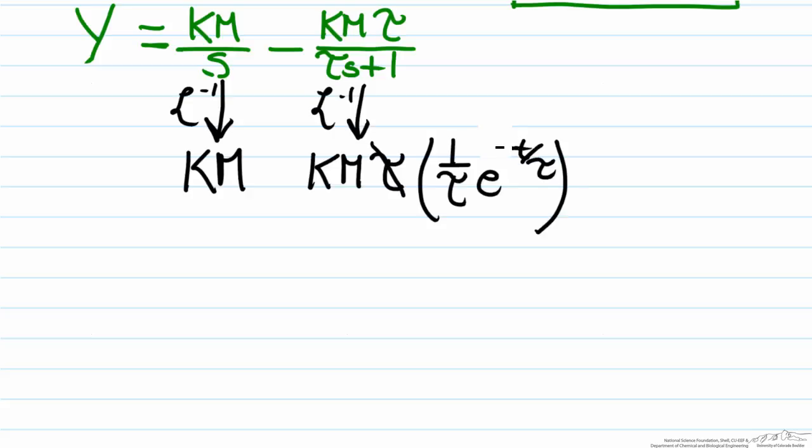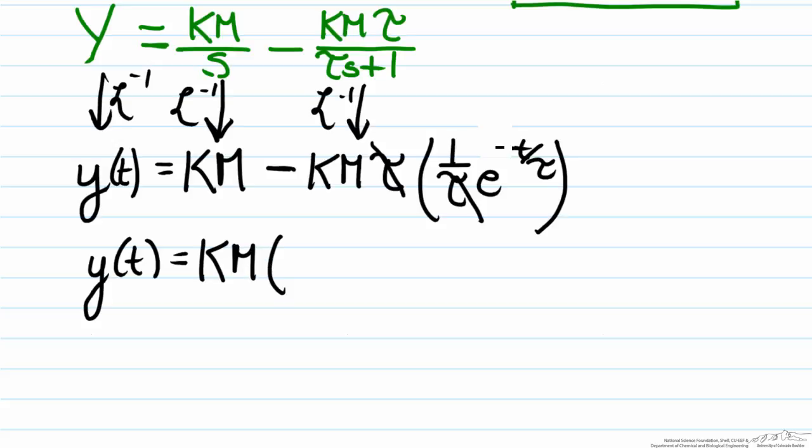The tau's will cancel, and we'll have a minus sign coming back down. The inverse Laplace transform of the left hand side will just simply be y of t, and if we factor out the km we end up with an answer of km times one minus e to the negative t over tau.